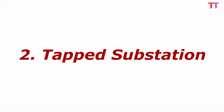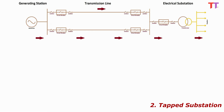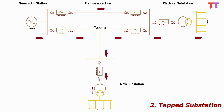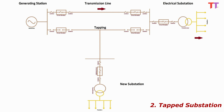2. Tapped substation. In this type of layout, on an existing nearby power transmission line, the power source for a newly constructed substation is tapped — hence called a tapped substation. This is also an economical supply system. However, in the event of source failure or in case of fault on the tapped source line, the complete substation goes dark, subsequently causing complete power breakdown of the connected load, same as in the case of a radial substation.